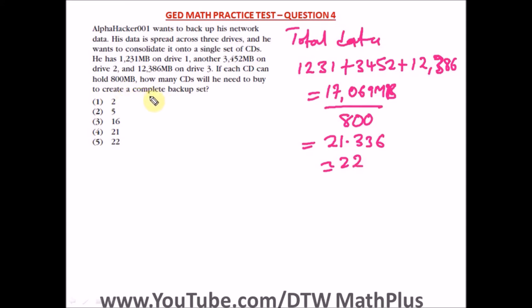So he has to buy 22 CDs to create a complete backup set. You can't buy a partial CD - you won't go to a computer store to get 21 CDs then half a CD. The question says each CD can hold up to 800 MB. And this 0.336 is telling us that the remaining data is 336 MB, which is not up to 800 MB. But we have to buy an extra full one so it can contain the 336 MB.